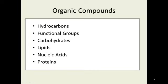In this next section we're going to be talking about organic compounds. There are two definitions of organic. The newer definition refers to produce raised without artificial fertilizers, pesticides, or herbicides. The older definition, which we're going with, is anything that is made out of carbon attached to hydrogen. In this category we're going to talk about hydrocarbons, functional groups, carbohydrates, lipids, nucleic acids, and proteins.